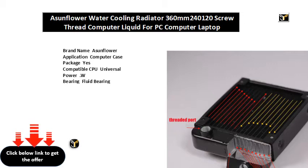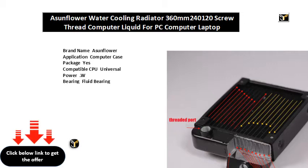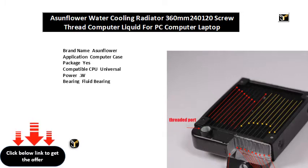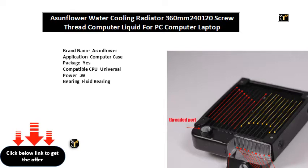CPU water cooling heat sink. Heat sink material: aluminum. Fan size: XX MM. SKU code. PC radiator: MMM aluminum radiator. Water cooling MM water cooling aluminum radiator.